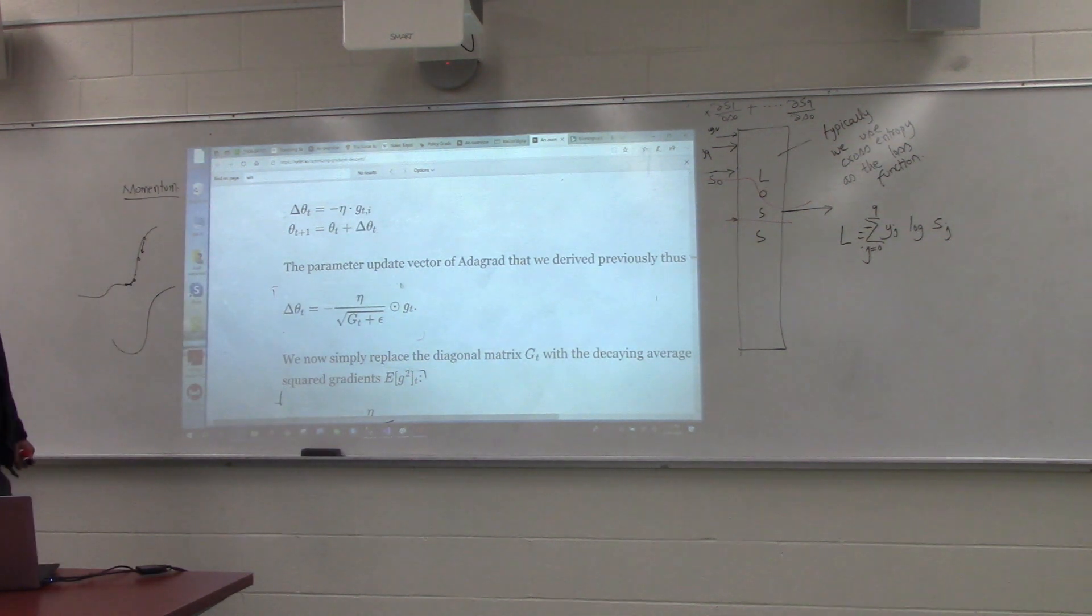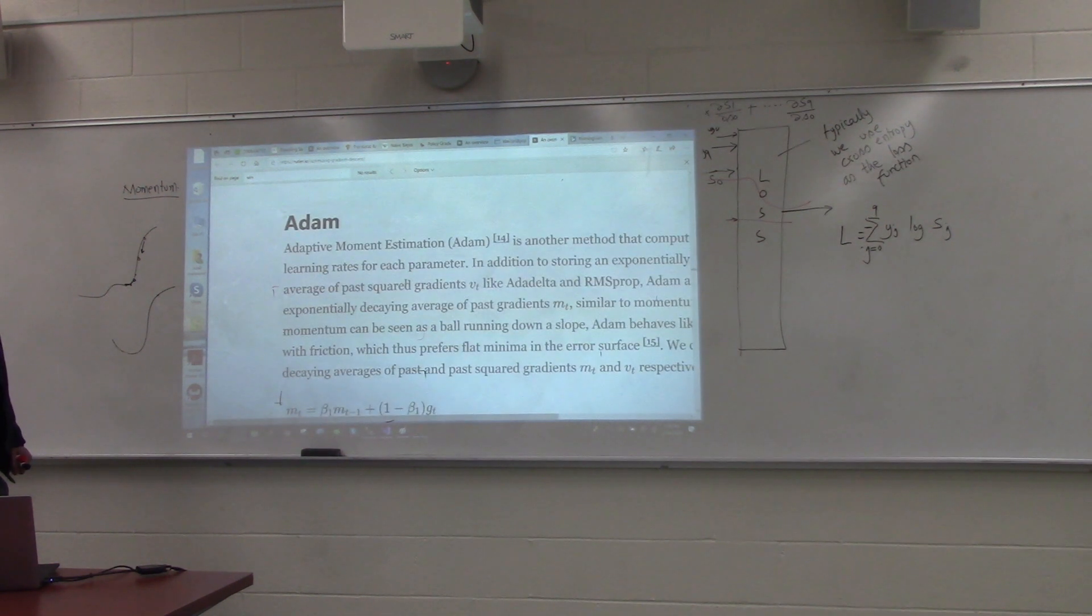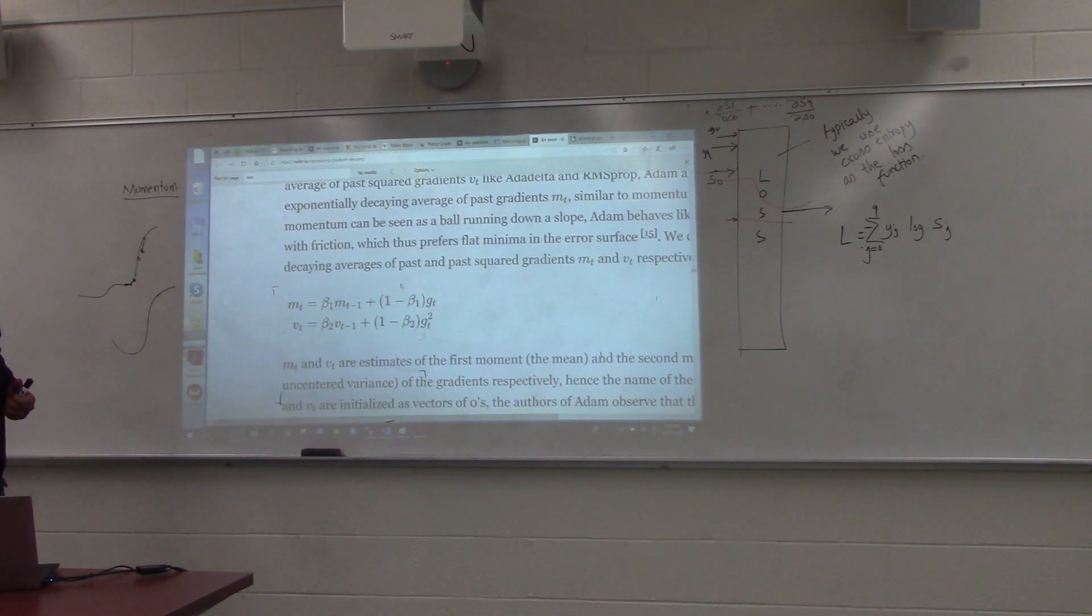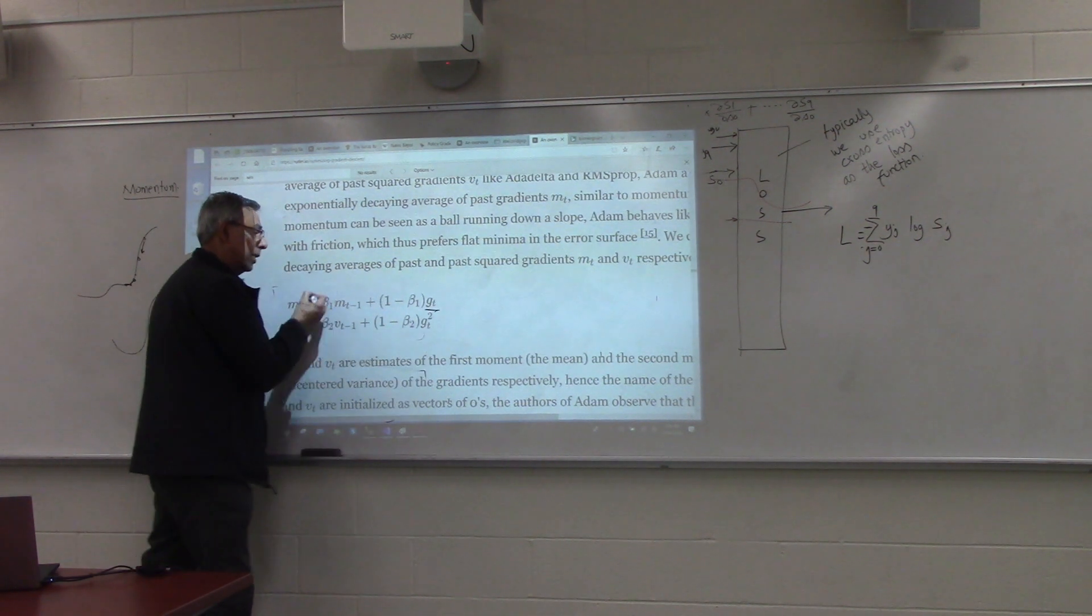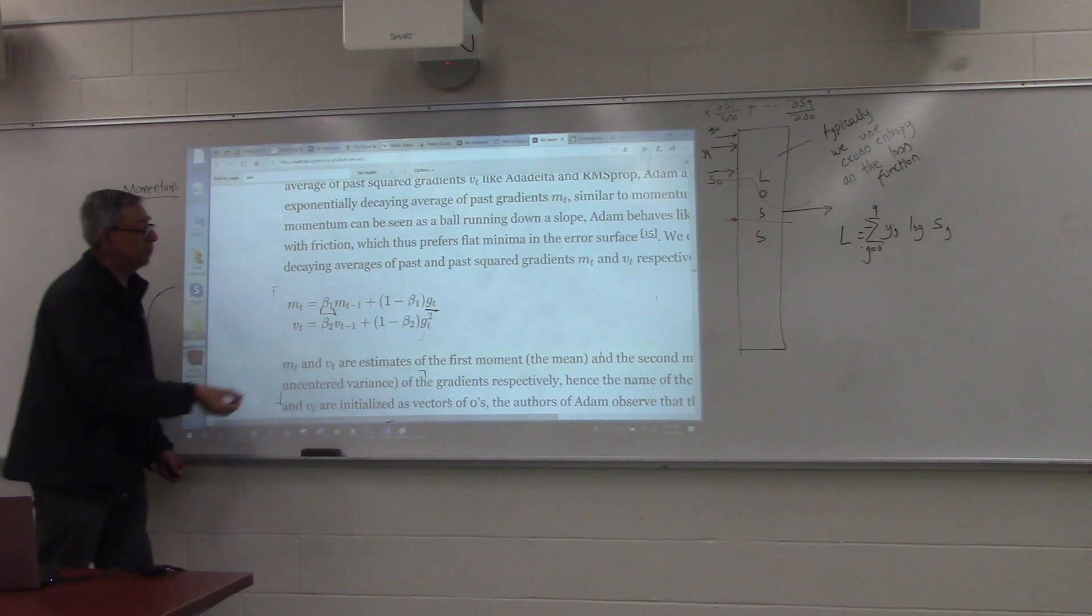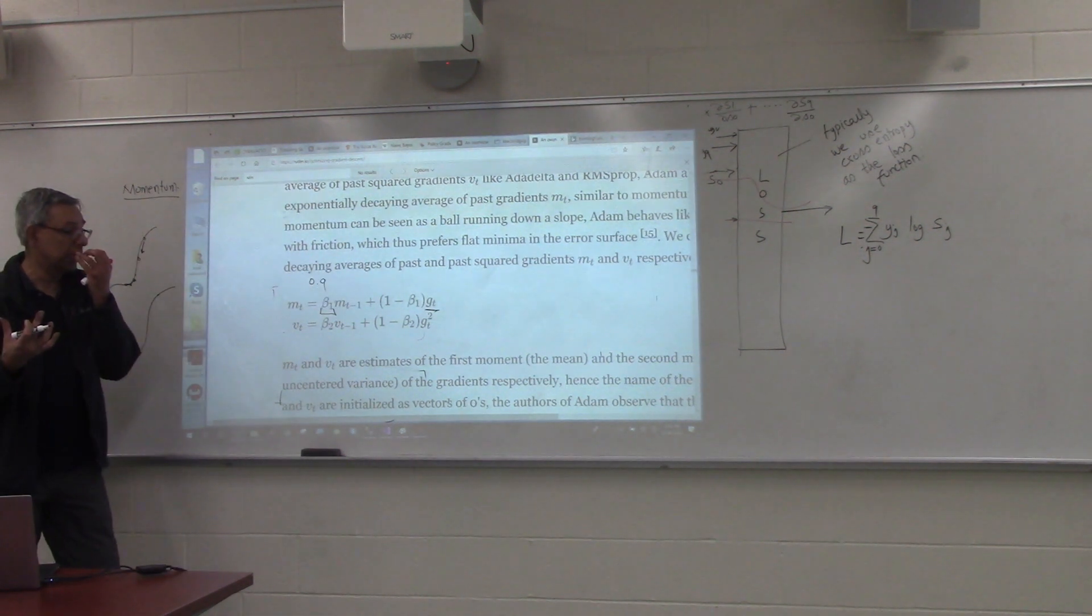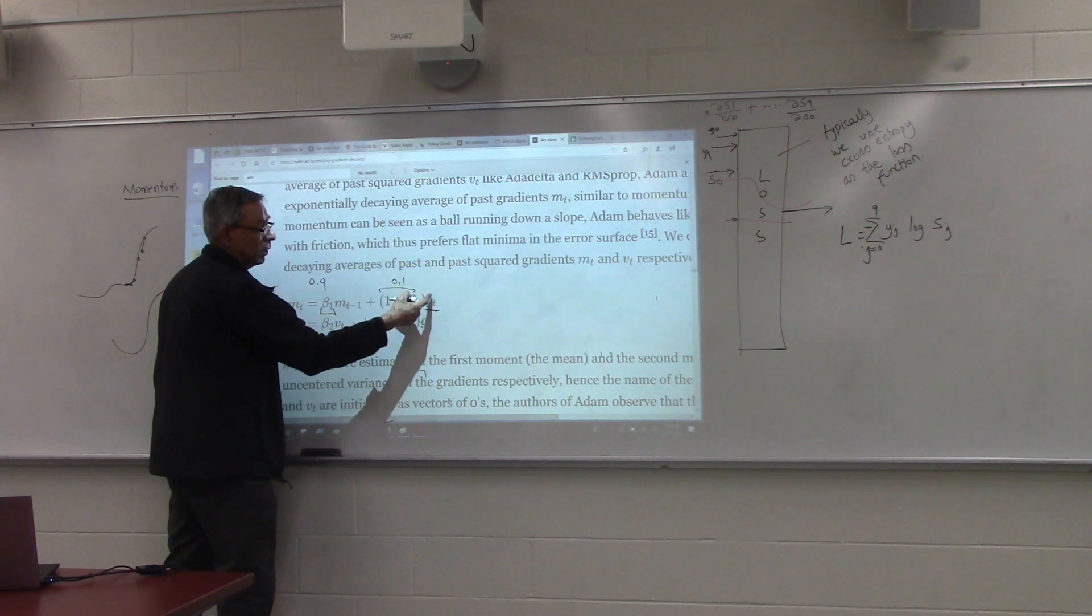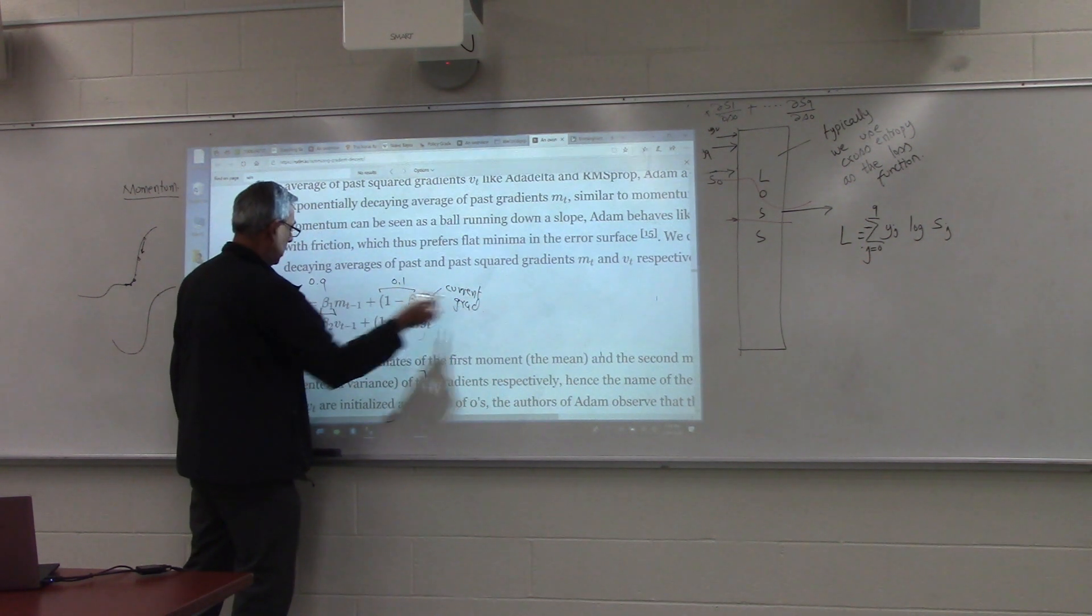So, one more minute and I'll stop. I just want to make sure you guys understand the most important learning rate algorithm, which is the Adam. And what is the fundamental idea in the atom? Take a past history of the gradients and discount it by beta 1.